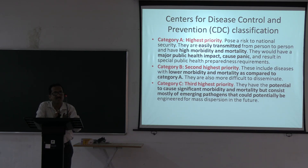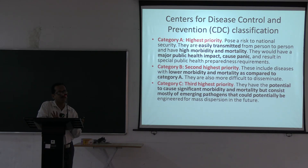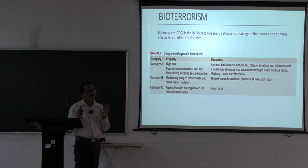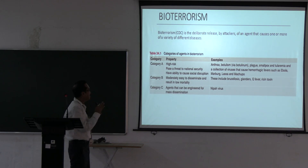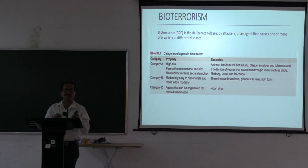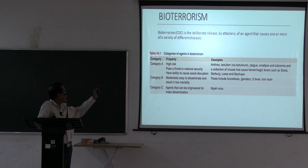Category A agents include: anthrax (Bacillus anthracis), Clostridium botulinum toxin, plague (Yersinia pestis), smallpox, tularemia (Francisella tularensis), and viral hemorrhagic fevers. The hemorrhagic fevers included in Category A are Ebola, Marburg, Machupo virus, and Lassa virus.